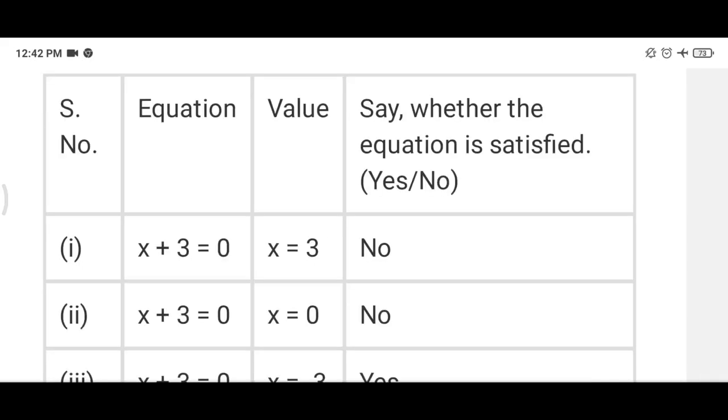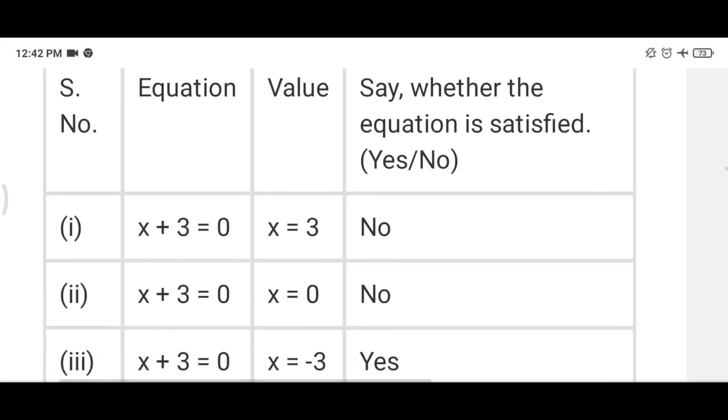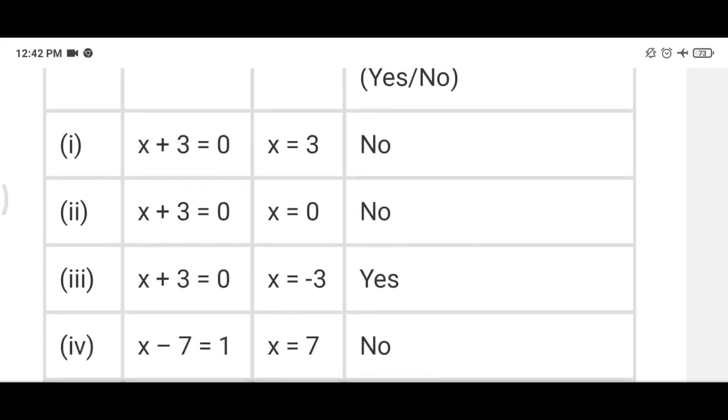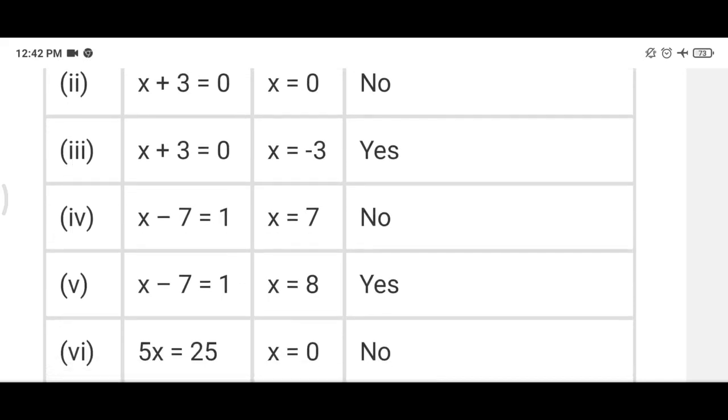Now here you can see the solution of this table. x plus 3 is equal to 0. If we put x equals 3, 3 plus 3 is 6. That's why it is no. In second part if we put x equals 0, 0 plus 3 is 3, it is not 0. So that's why it is again no. In third part if we put x equals to minus 3, then minus 3 plus 3 is equal to 0. That's why it is yes.